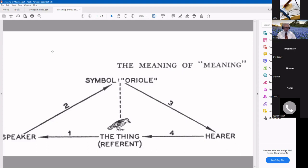It's the same word. It's still a symbol for not only the bird but also the baseball player. But if the hearer understands oriole to mean the baseball player, then they're not going to understand each other. They may be talking about entirely different things.